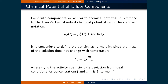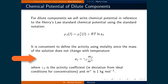Moving forward, we will write the standard chemical potential in reference to the Henry's Law standard chemical potential of component J in the liquid phase. This means the chemical potential of component J in the liquid phase equals the standard chemical potential of component J in the liquid phase plus RT times the natural logarithm of the activity of component J. Since this standard state is defined with Henry's Law constants, we can use the constant that relates partial pressure to molality instead of mole fraction. The activity of component J can be expressed as the activity coefficient times the molality divided by the standard molality, which equals 1 kg per mole.